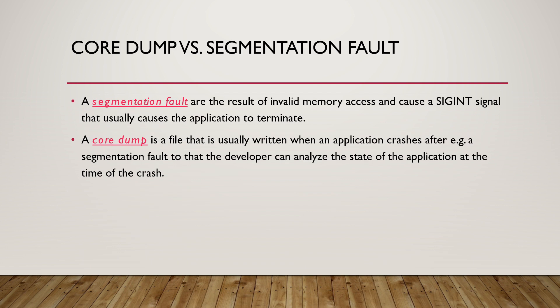First we need to understand the difference between the core dump and segmentation fault. A core dump is a file that is generated when an application crashes. After a segmentation fault, the application will crash and the result will be returned as a core dump file. This is helpful for the developer to analyze the state of the application at the time of the crash — it is like a black box. Remember, a core dump is not just an error; it is a file that gets generated and you can analyze it later to see exactly where and how the error occurred.